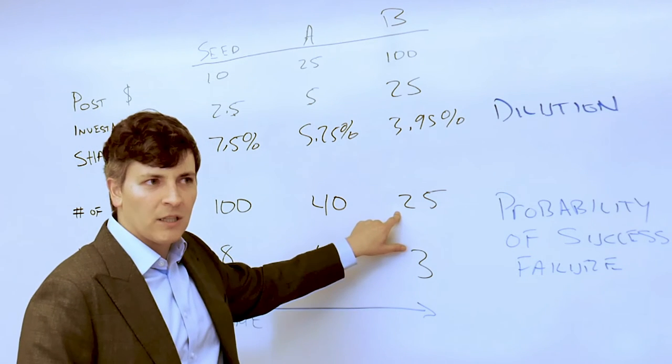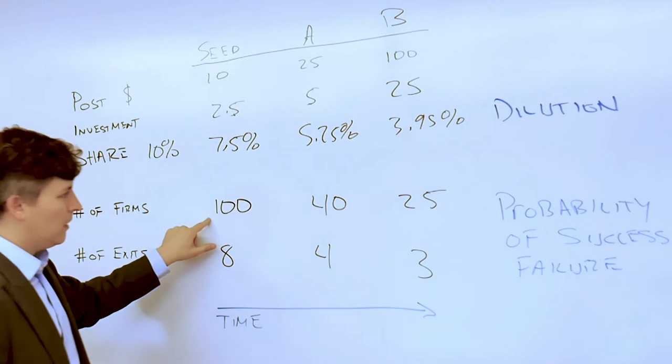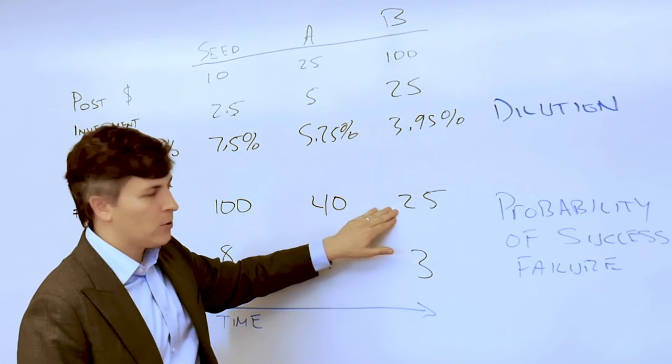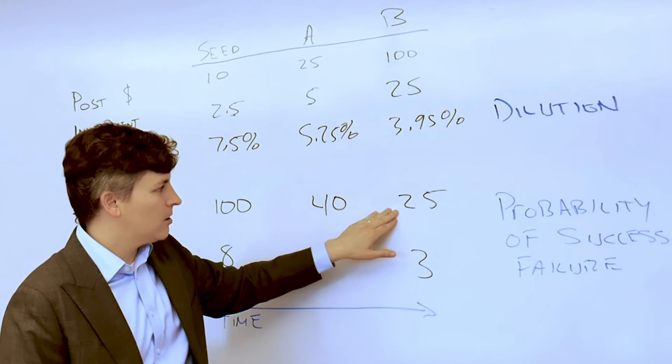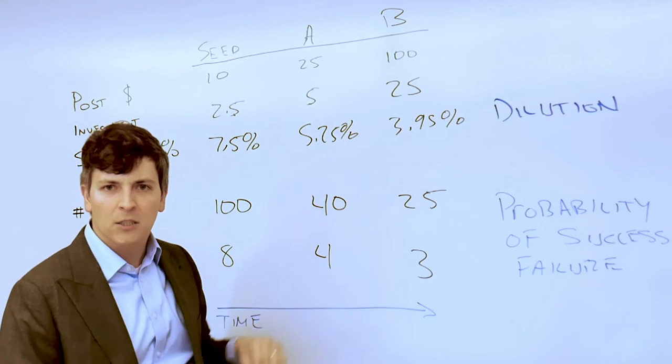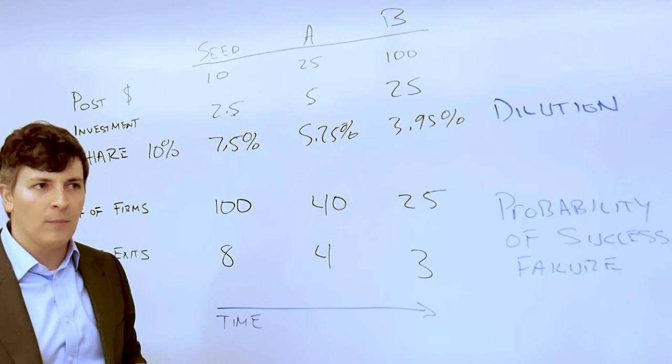25% of the firms that we started out with have made it to this Series B point. And so that 4% of $100 million is now actually an expectation worth about $1 million.